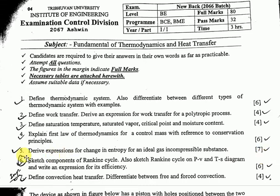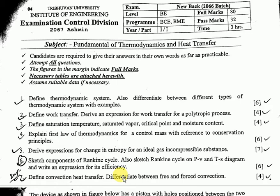Question number six from Chapter 5, second law of thermodynamics: sketch components of the Rankine cycle, also sketch the Rankine cycle on PV and TS diagrams, and write the expression for its efficiency.